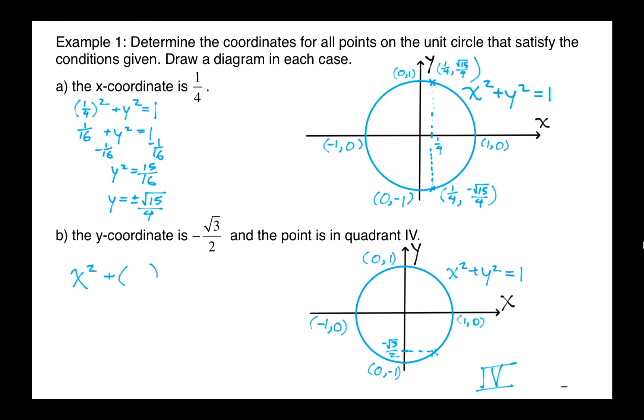If you plug that into the equation and solve for x, you'll be squaring the negative root 3 over 2, so that's 3 quarters. If we subtract the 3 quarters from both sides, we get x squared equals 1 quarter. And normally we'd take plus or minus the square root, but since we're in quadrant 4, we're only going to take the positive square root, so that's positive 1 half.